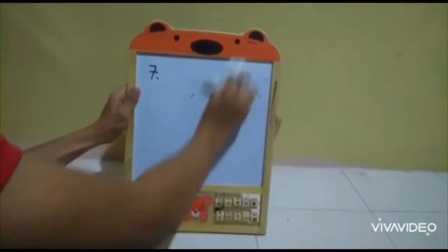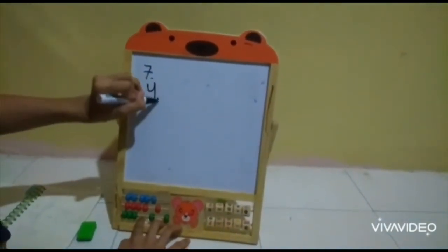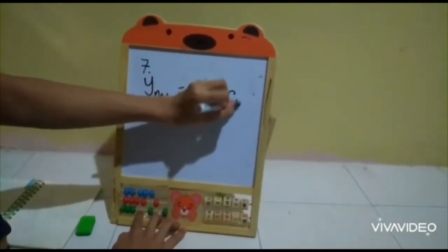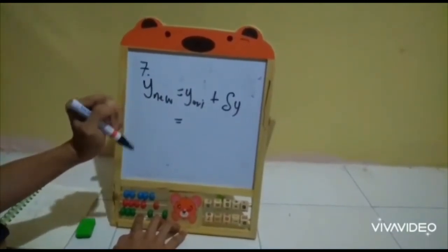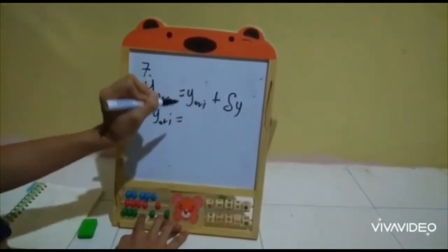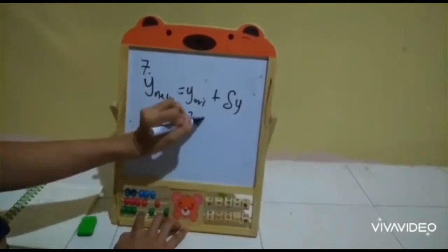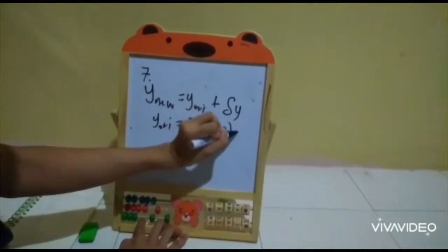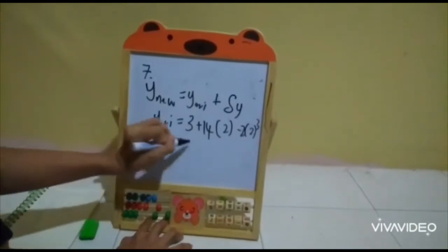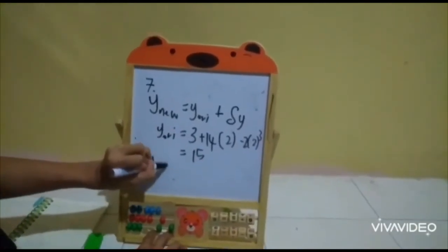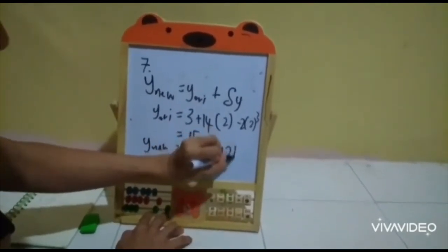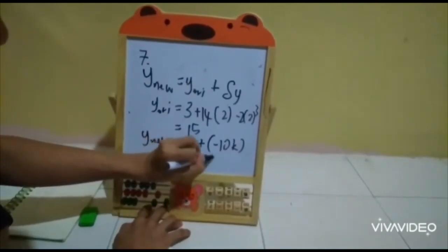For the approximation of y new, the formula is y_new = y_original + delta y. For y_original, substitute x = 2: y = 3 + 14(2) - 2(2)³ = 3 + 28 - 16 = 15. So y_new = 15 + (-10k) = 15 - 10k.